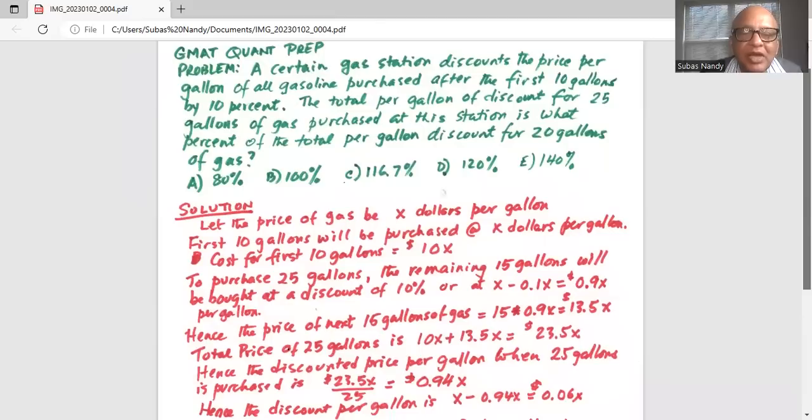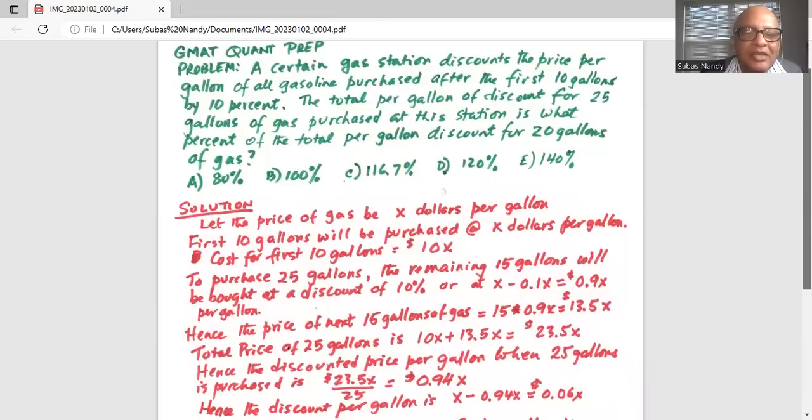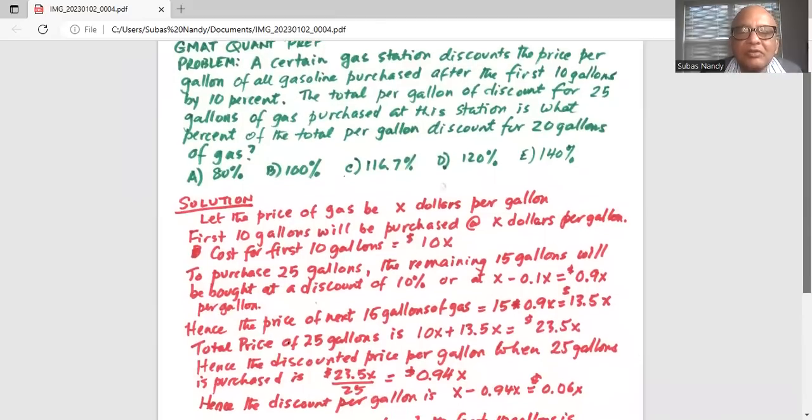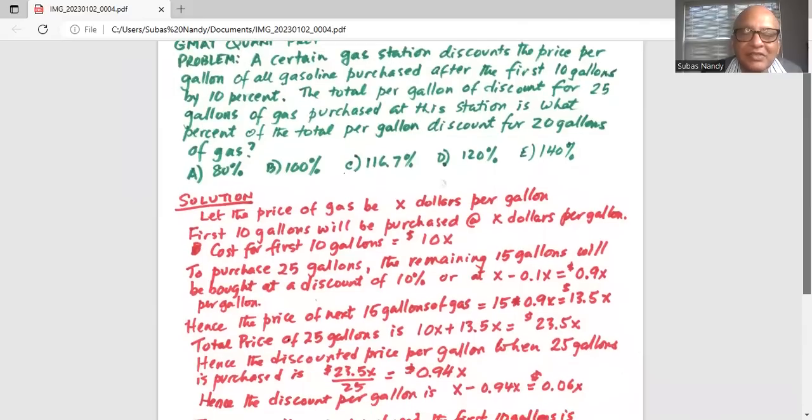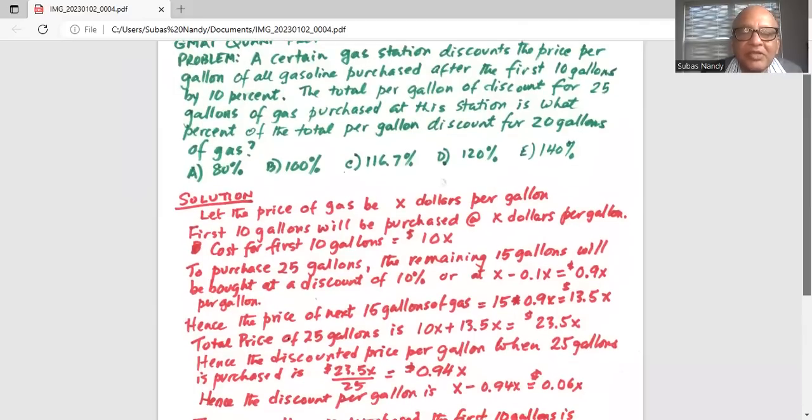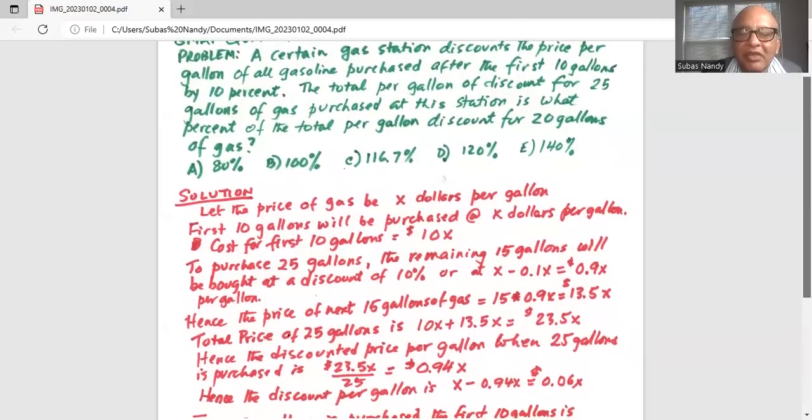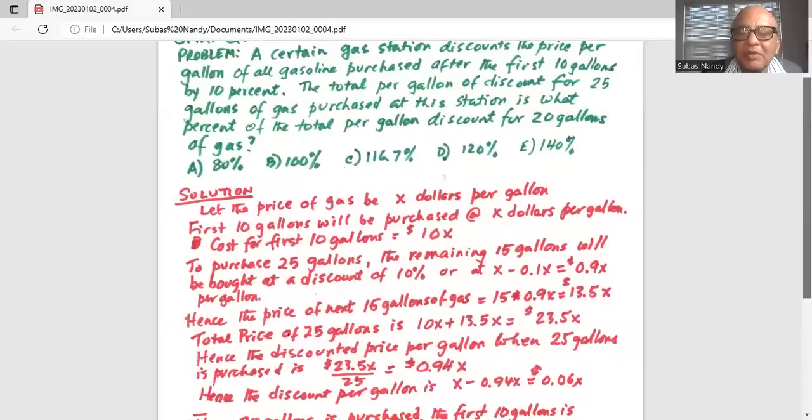To purchase 25 gallons, the remaining 15 gallons will be bought at a discount of 10%, or at X minus 0.1X, or 0.9X per gallon. Hence the price of the next 15 gallons of gas will be 15 multiplied by 0.9X, or 13.5X.